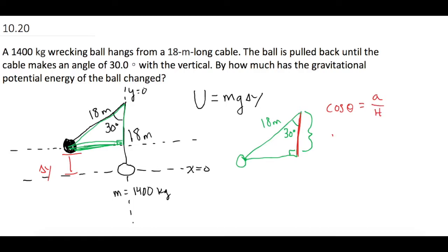So adjacent is equal to h cosine of theta. So the adjacent is 18 times the cosine of 30, and 18 cosine 30 is equal to 15.588 meters.